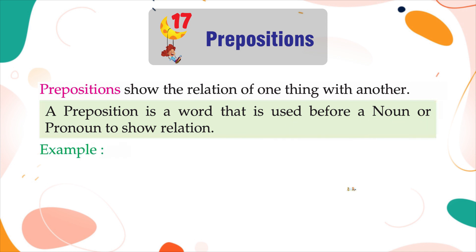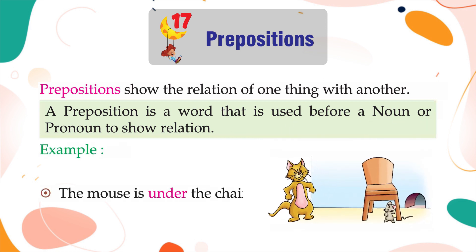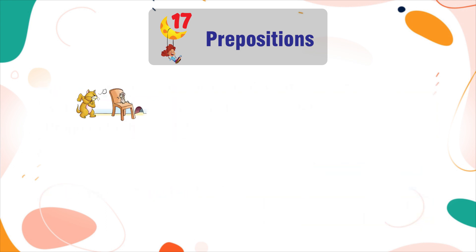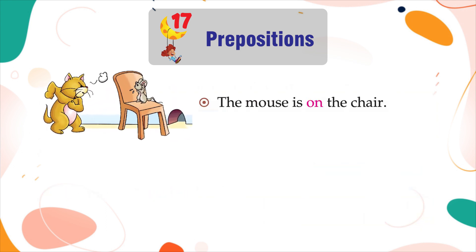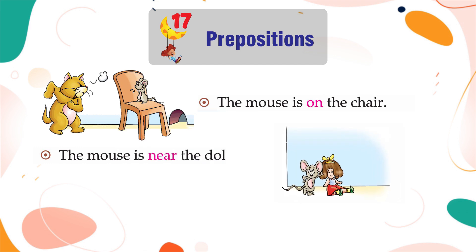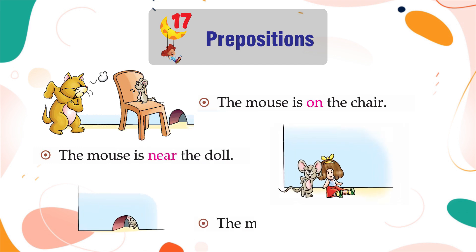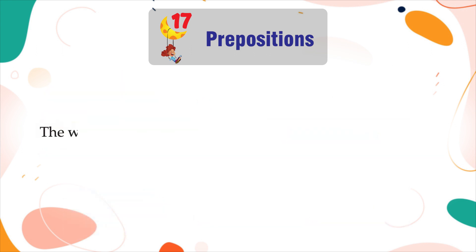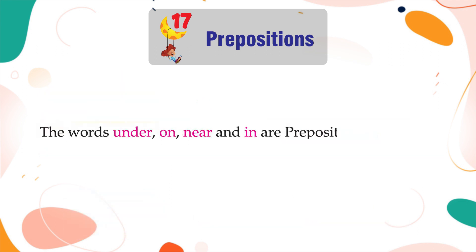Example: The mouse is under the chair. The mouse is on the chair. The mouse is near the doll. The mouse is in the hole. The words under, on, near, and in are prepositions.